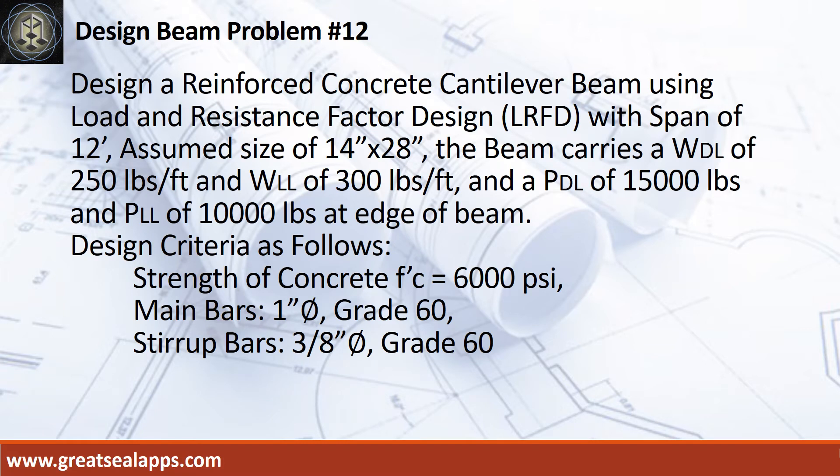Design a reinforced concrete cantilever beam using load and resistance factor design with a span of 12 feet and assumed size of 14 inches by 28 inches. The beam carries a uniform dead load of 250 pounds per foot and uniform live load of 300 pounds per foot, and a concentrated dead load of 15,000 pounds and concentrated live load of 10,000 pounds at the edge of the beam.